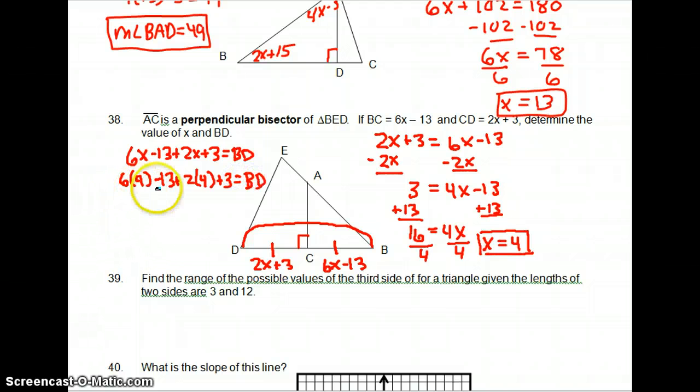So we get 6 times 4 minus 13 plus 2 times 4 plus 3 equals BD. 6 times 4 is 24 minus 13. So 24 minus 13 plus 8 plus 3 equals BD. 24 minus 13 is 11 plus 8 is 19 plus 3 is 22. So 22 equals BD.